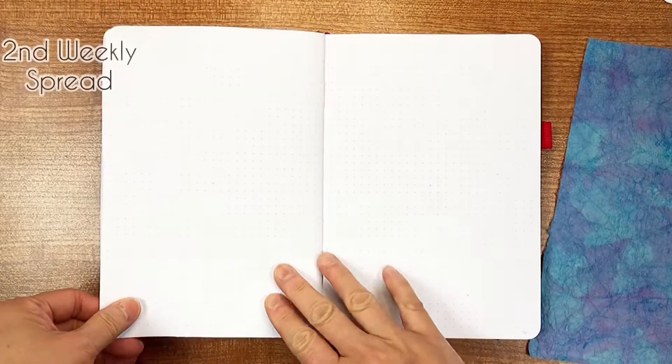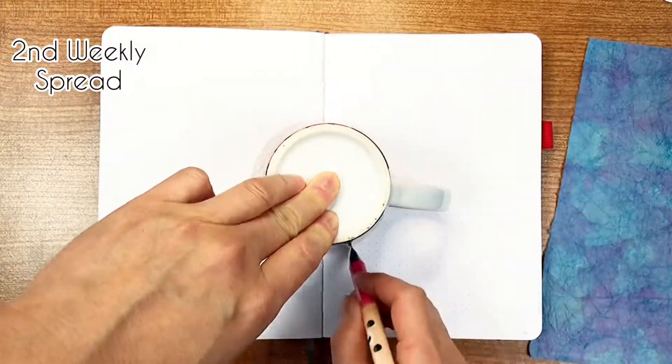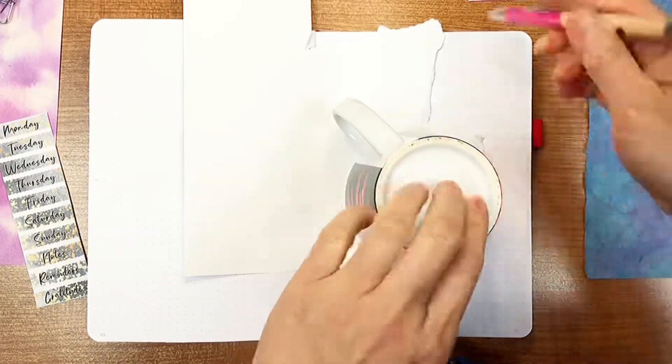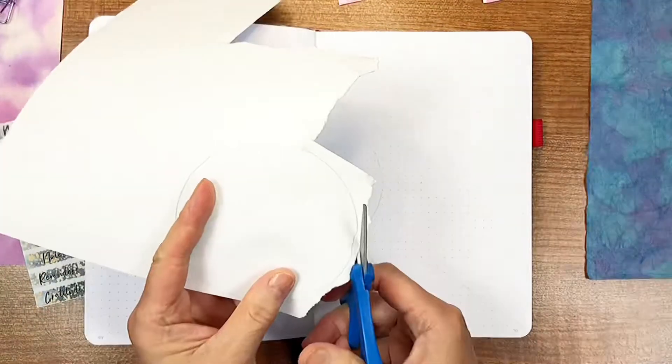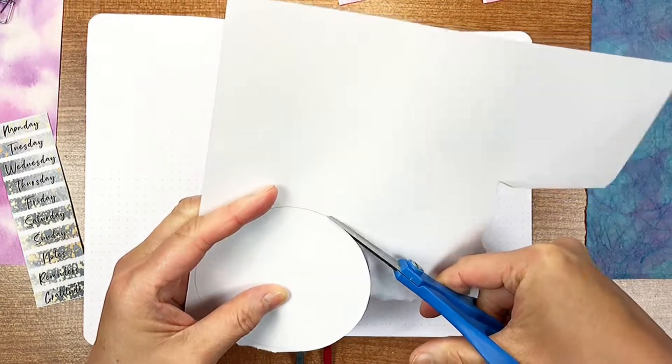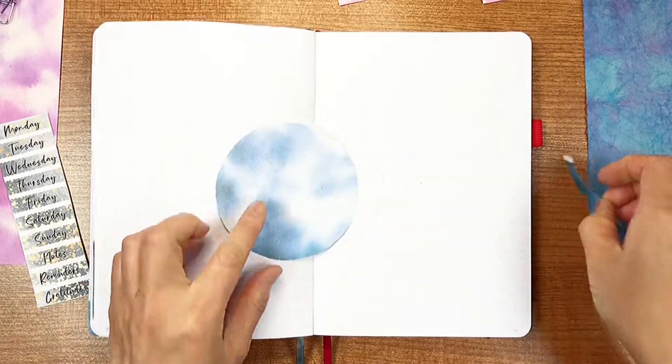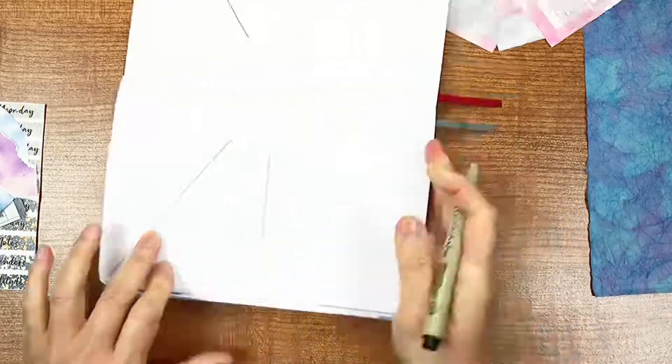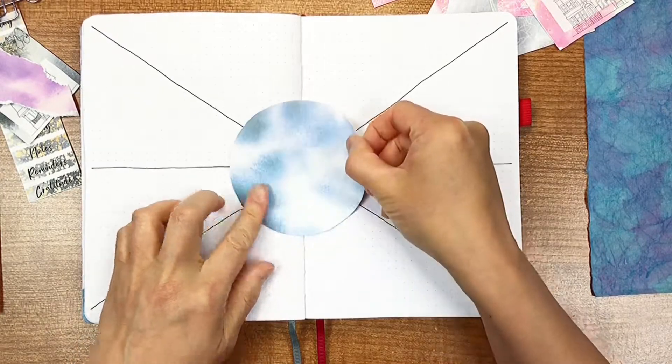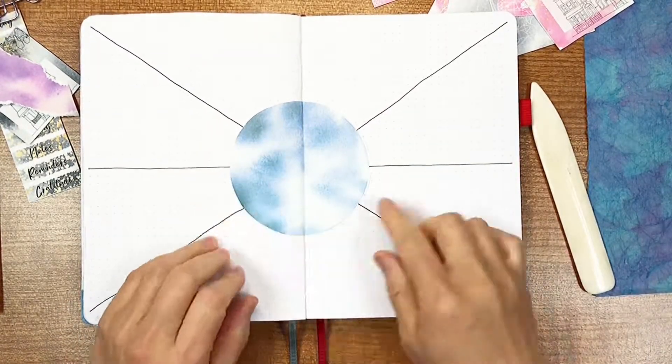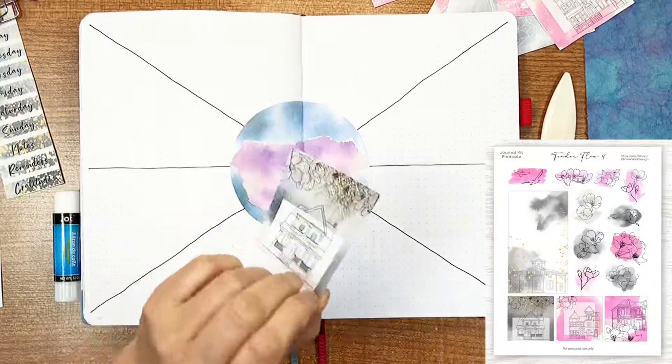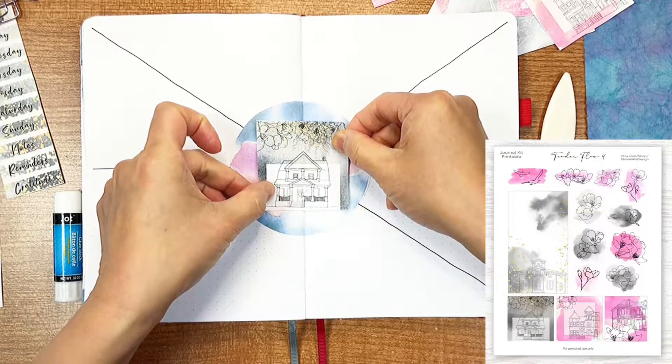Here is my second weekly spread. I'm using a marker to trace a circle for the center piece. Now, I'm cutting the circle out and drawing some lines to divide the page into 8 sections. Putting on the background papers. Then, placing a decorative sticker in the center.